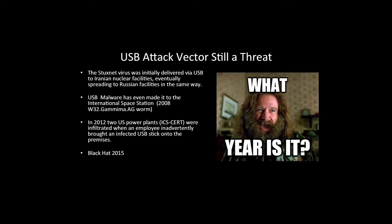This was a long time ago, but USB is still an attack vector — we see it regularly in the news. Stuxnet was initially delivered via USB. There was also USB malware that hit the International Space Station — someone brought in a game on a flash drive that happened to be infected. In 2012, two US power plants were infiltrated when an employee brought an infected USB stick into the environment. At Black Hat, a new USB exploit was demonstrated: they scattered flash drives in the hotel, people plugged them in, and information was gathered — people are very, very dangerous with flash drives.